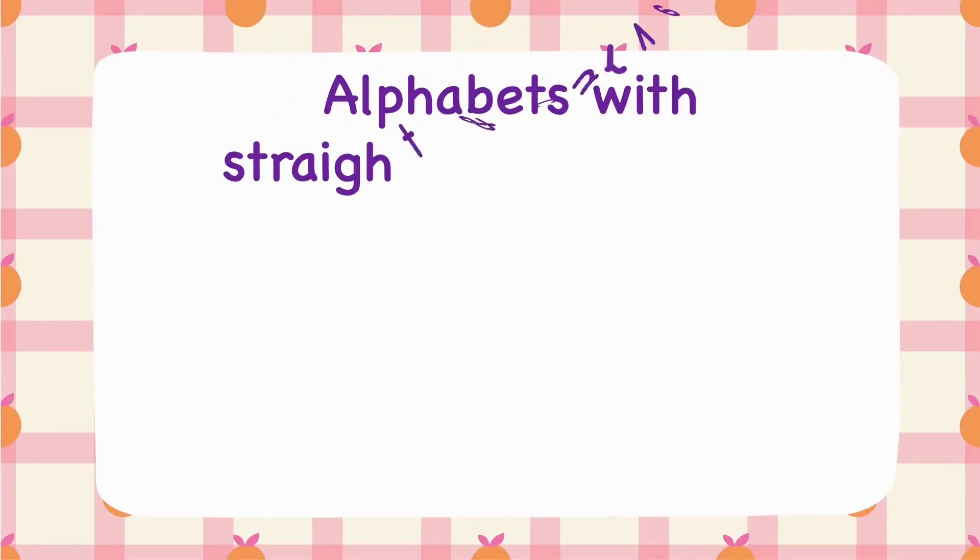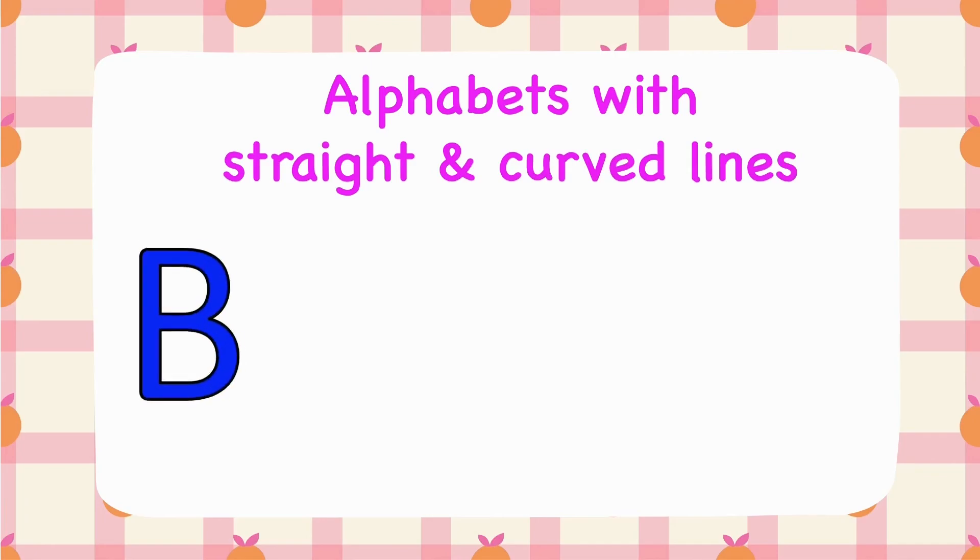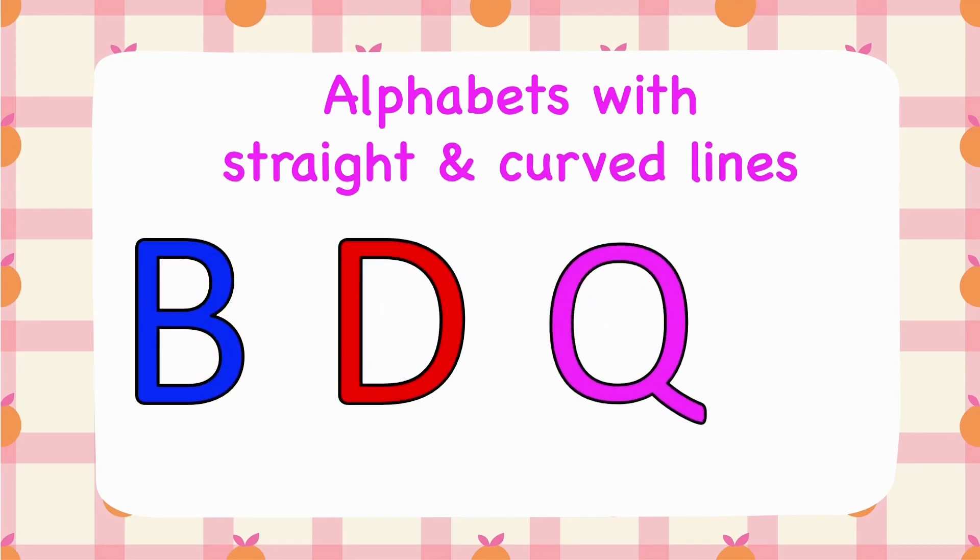We also have alphabets with both straight and curved lines. Some of them are B, D, Q, J.